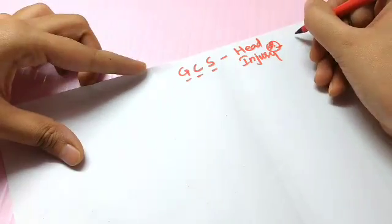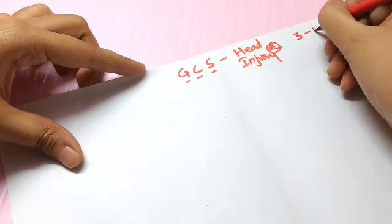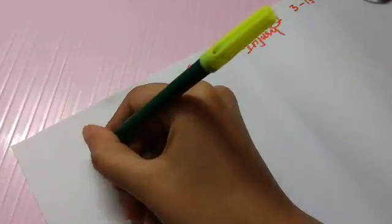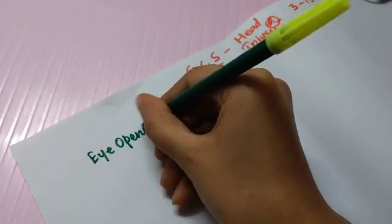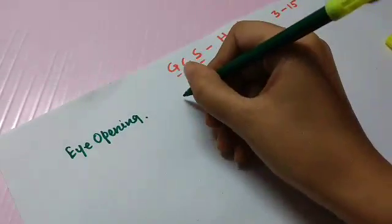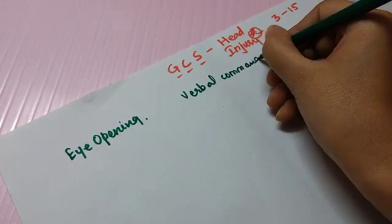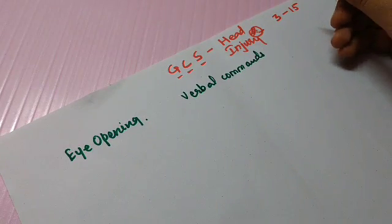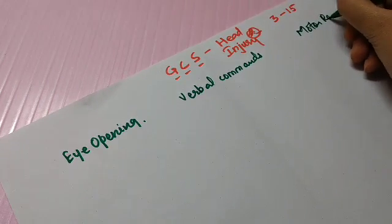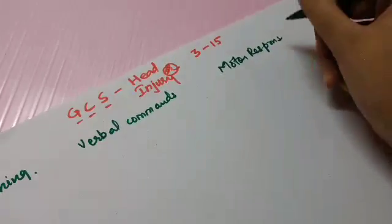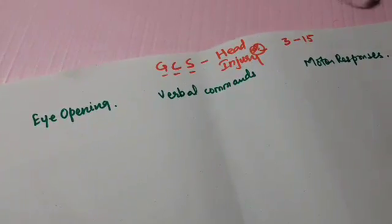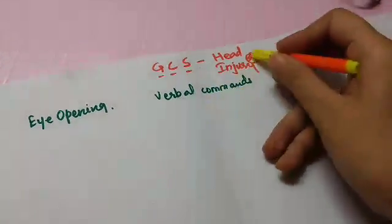GCS is the Glasgow Coma Scale. The minimum value is 3 while the maximum is 15. Within the GCS there are three components: the first one is eye opening, the next one is following verbal commands, and the next one is motor responses.